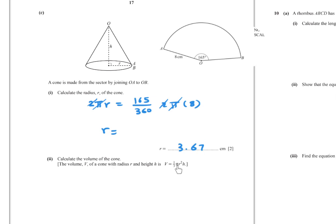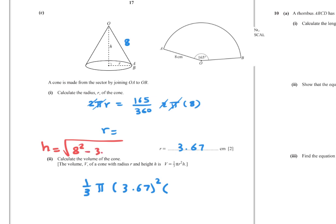Part (c)(ii): Calculate the volume of the cone. Volume equals (1/3) pi r squared h. The radius is 3.67 and the slant height is 8 (the sector radius). The height equals square root of (8 squared minus 3.67 squared) equals 7.11. Volume equals (1/3) times pi times 3.67 squared times 7.11 equals 100 cm cubed to 3 significant figures.